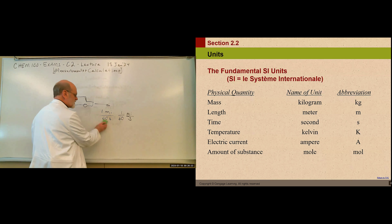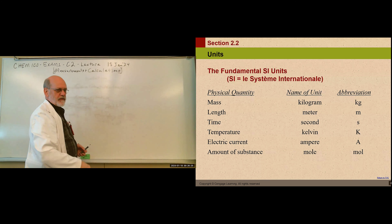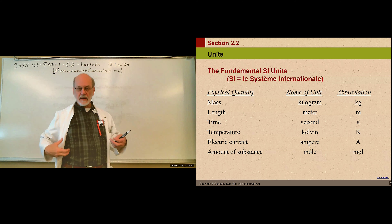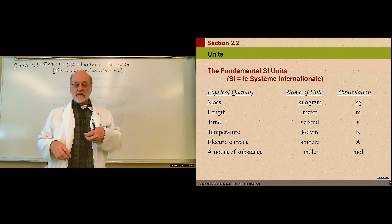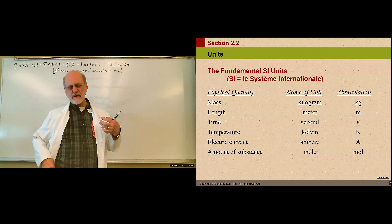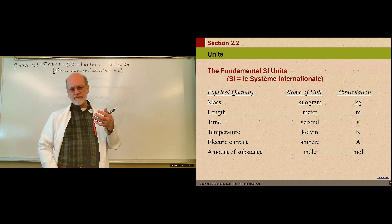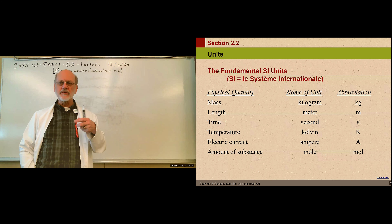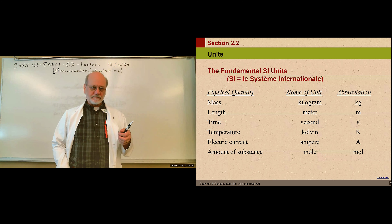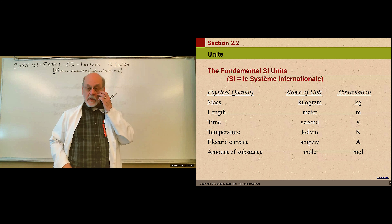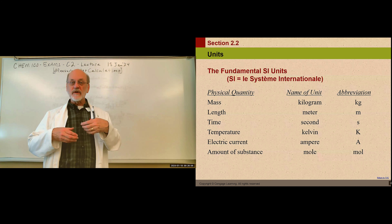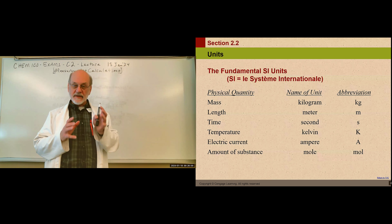Here is the SI system — agreed-upon standard values for various physical measurements. SI is an abbreviation for the French international system — the French do everything backwards, which is why S comes before I. In this system, all scientists have agreed upon standards. The fundamental unit of mass is the kilogram.